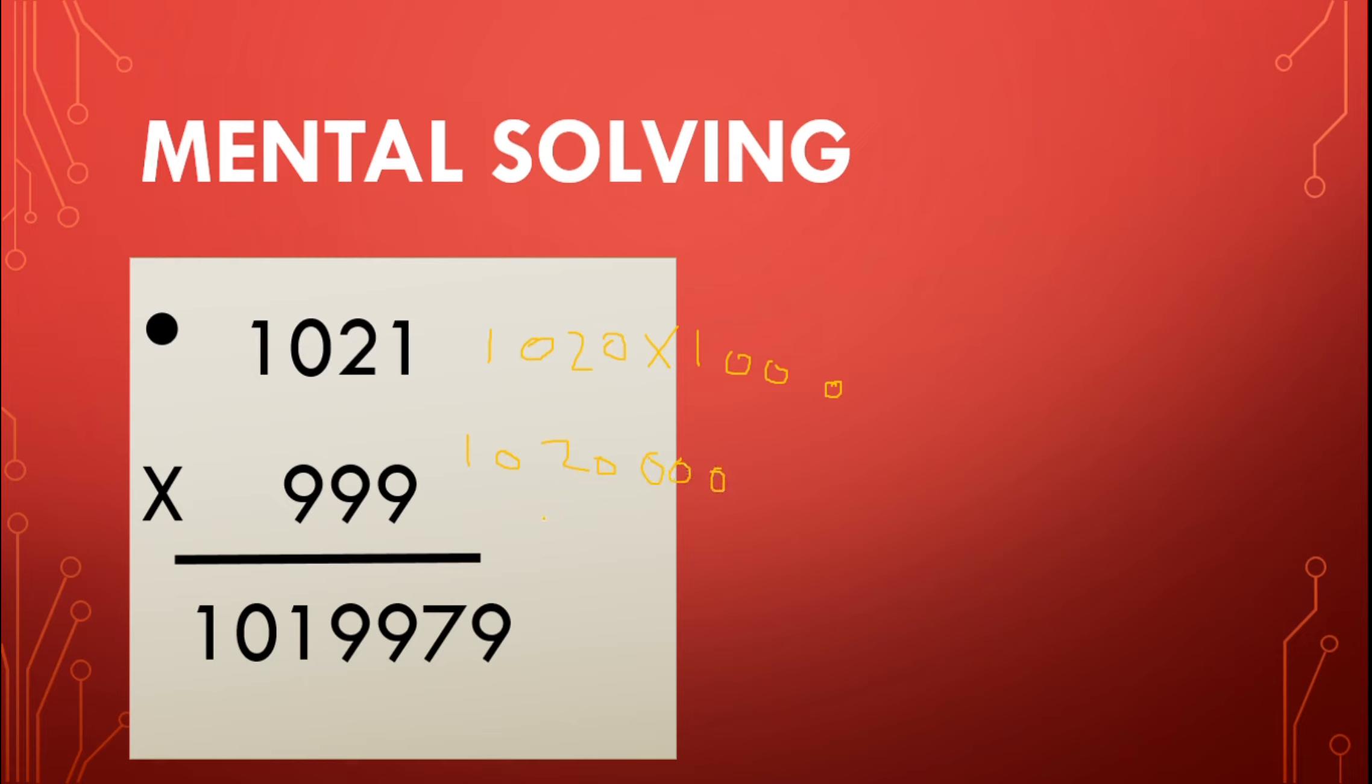Now minus this: 1,020,000 minus 21. So our answer would be 1,019,979.